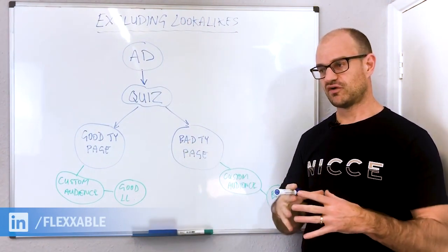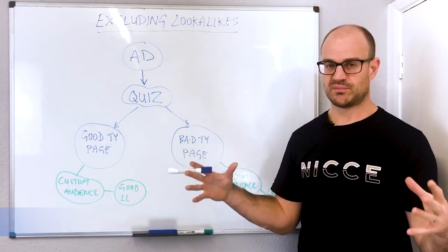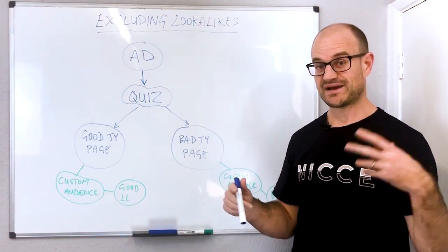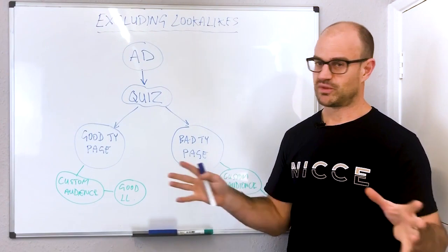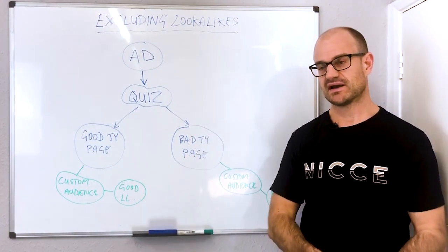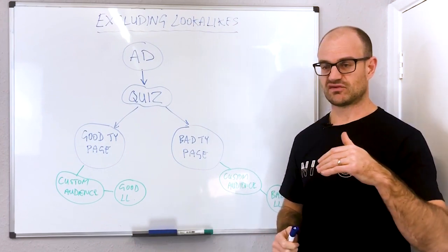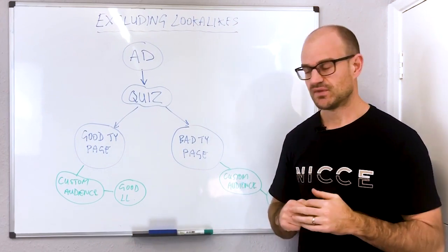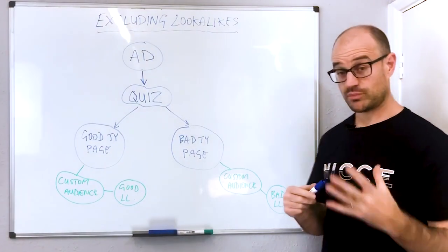What happens then is Facebook's finding however many million people that we know are probably going to be a bad car loan prospect, not a good lead for that client, and we're excluding them completely from our targeting. This automatically gives us a better chance of generating great quality leads.